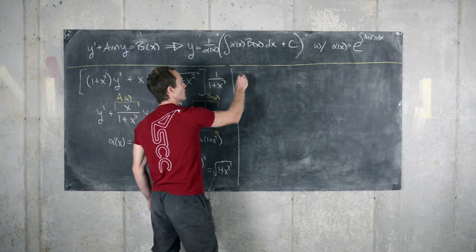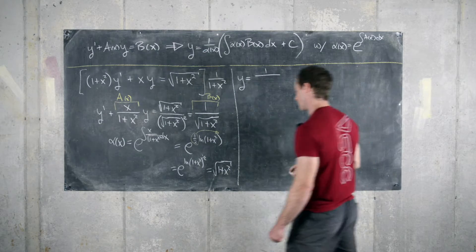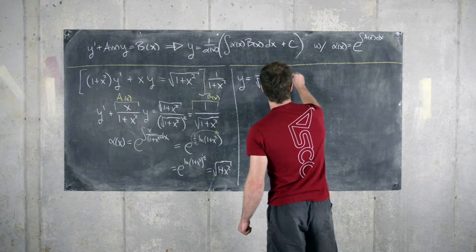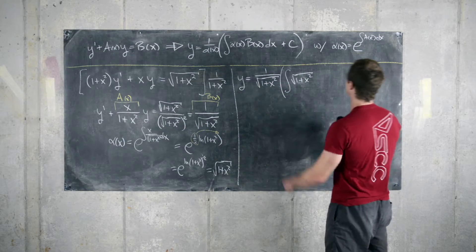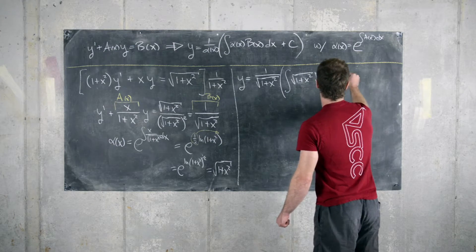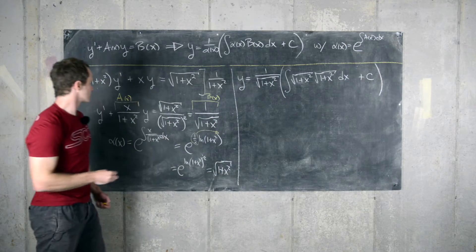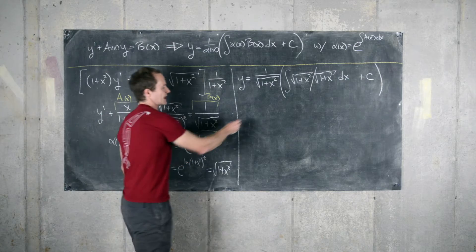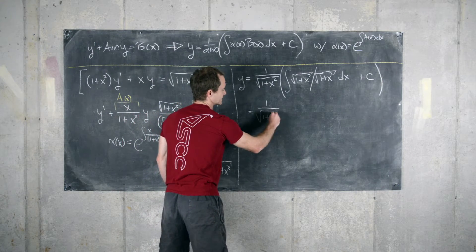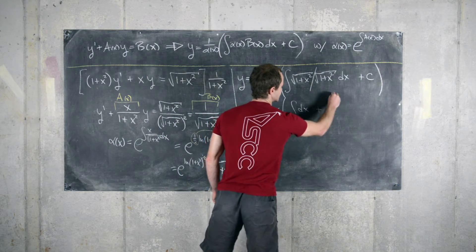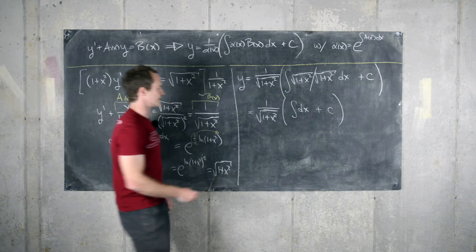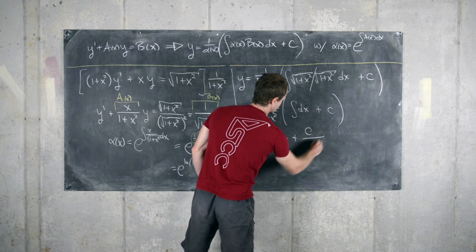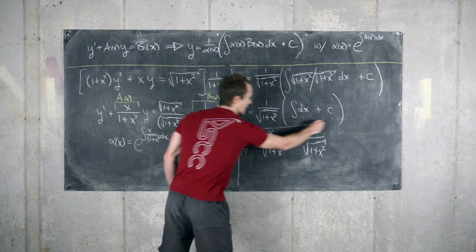So now we'll have y equals one over alpha — that'll be one over the square root of one plus x squared — times the quantity the antiderivative of the square root of one plus x squared times one over the square root of one plus x squared dx, plus a constant of integration. Those simplify to give us one over the square root of one plus x squared times the antiderivative of one dx plus a constant. The antiderivative of one is just x, so that gives us x over the square root of one plus x squared plus a constant over the square root of one plus x squared. That is our final answer.